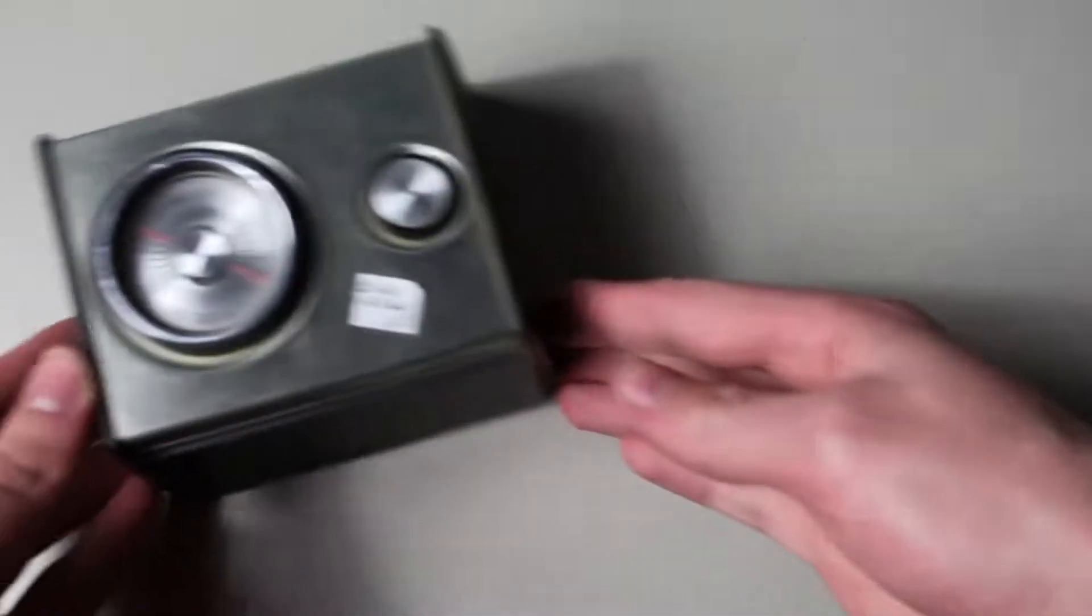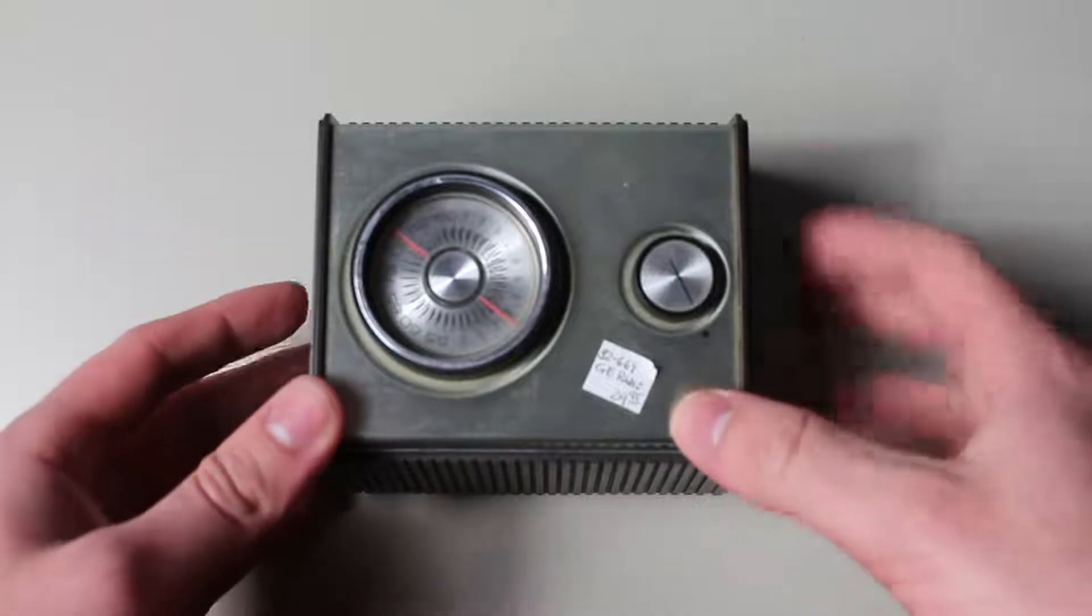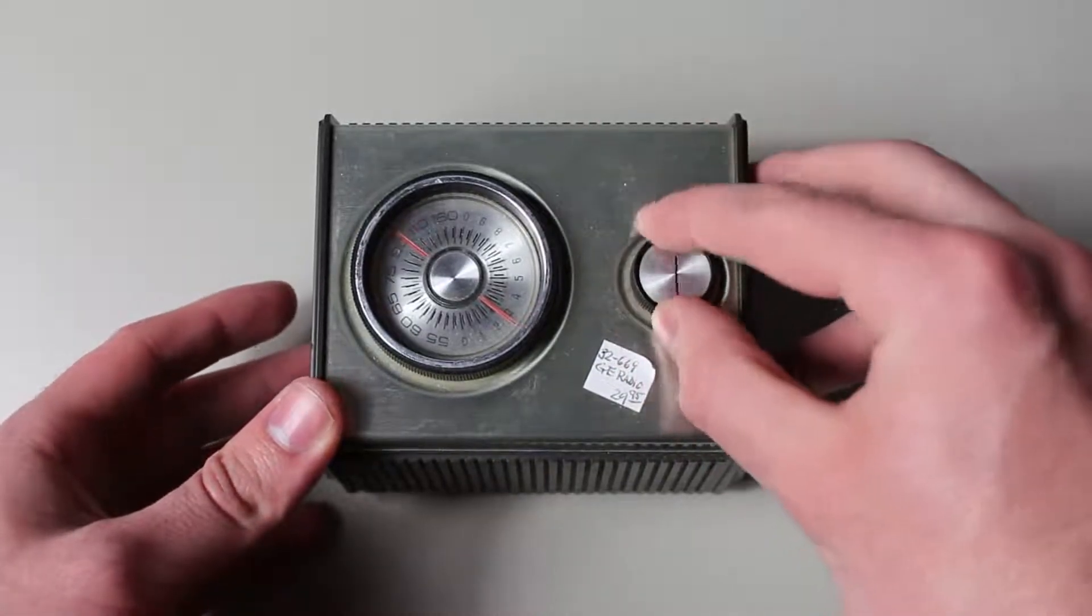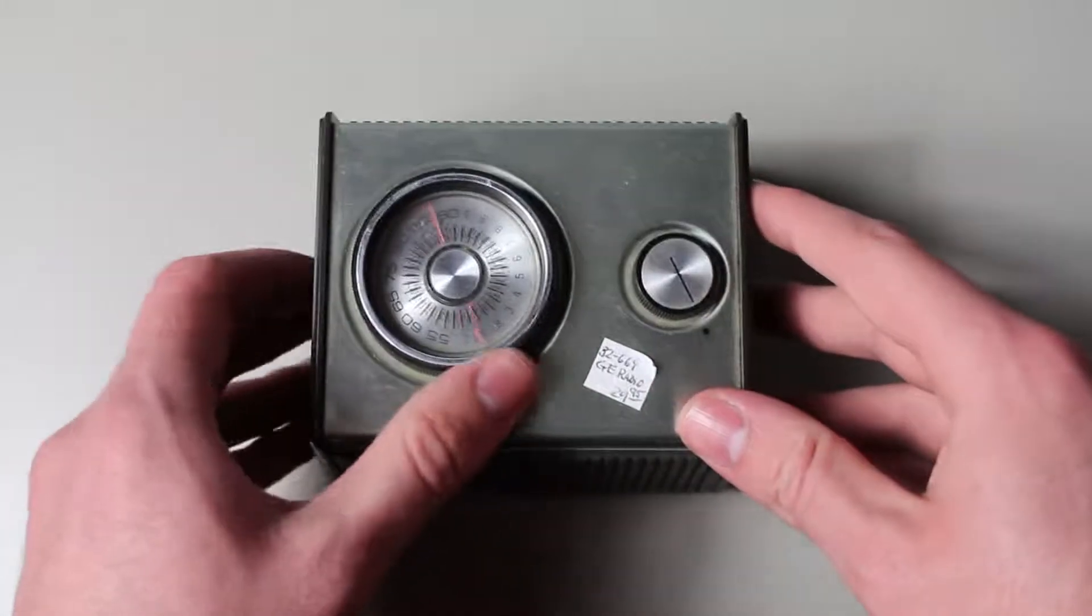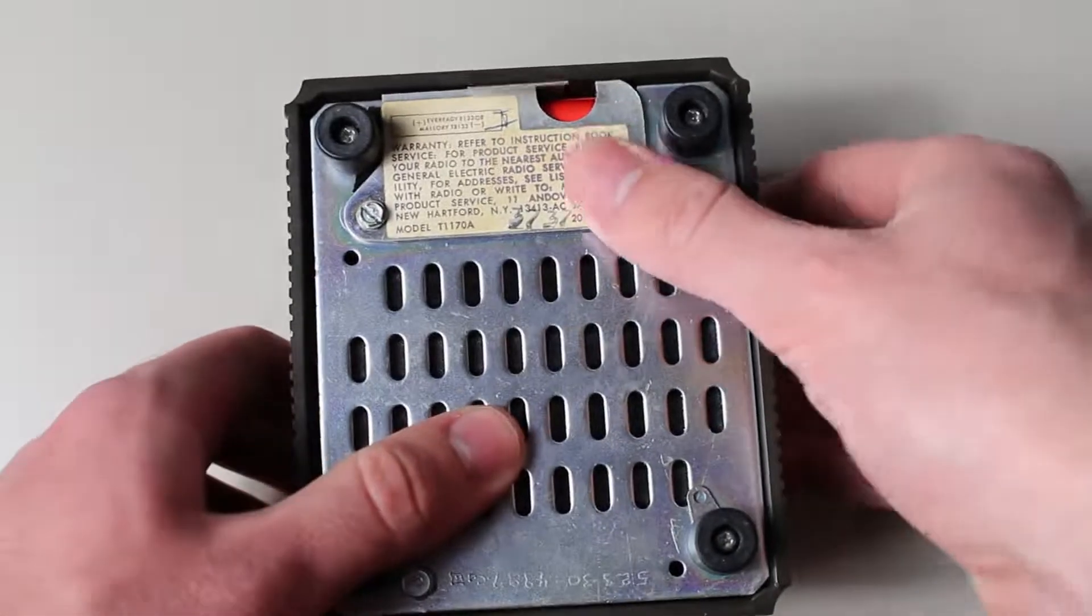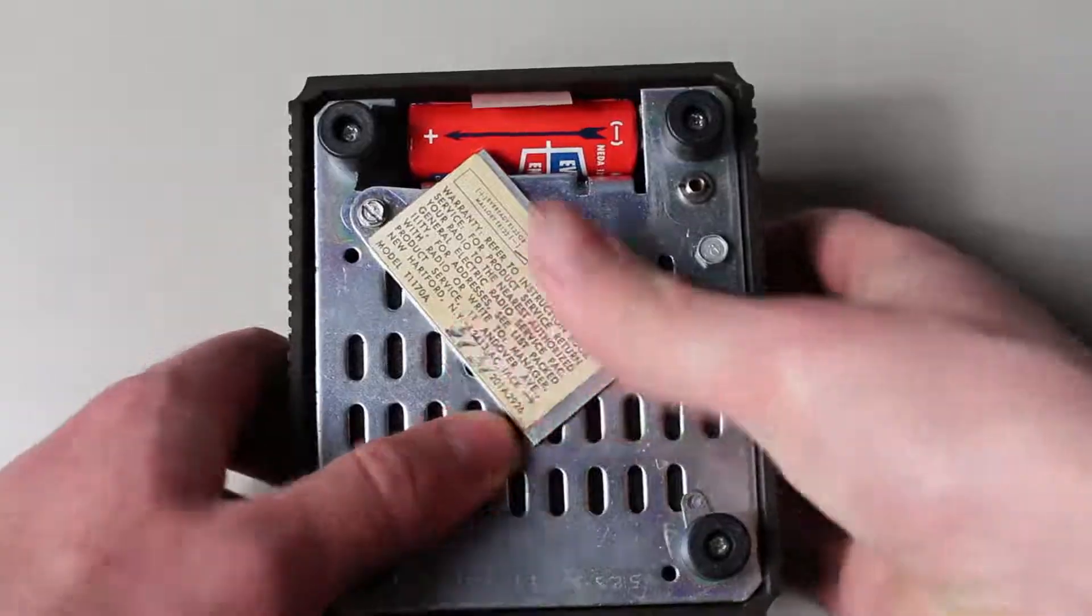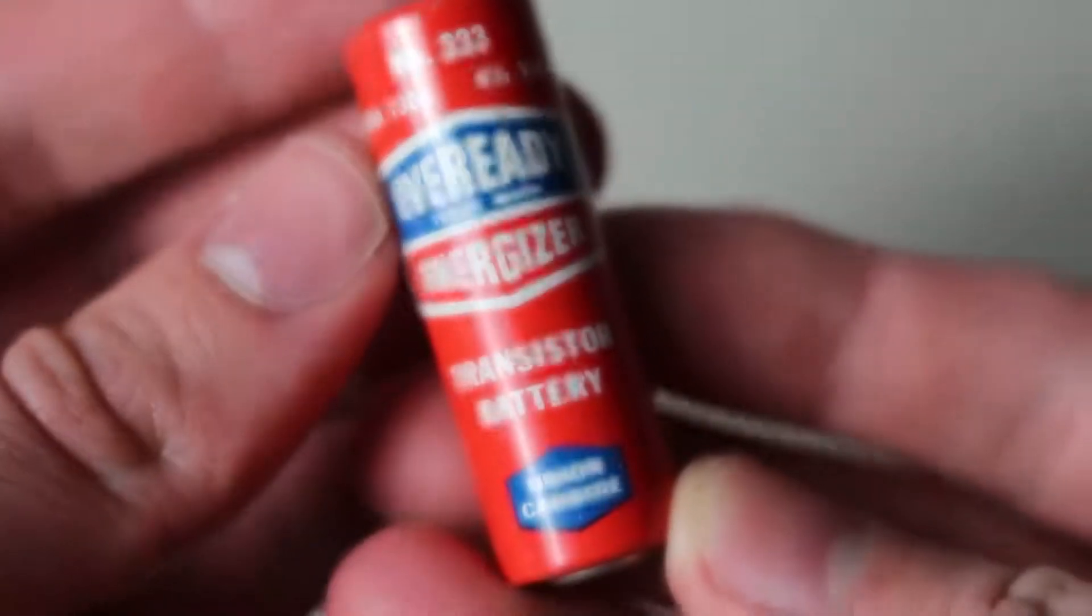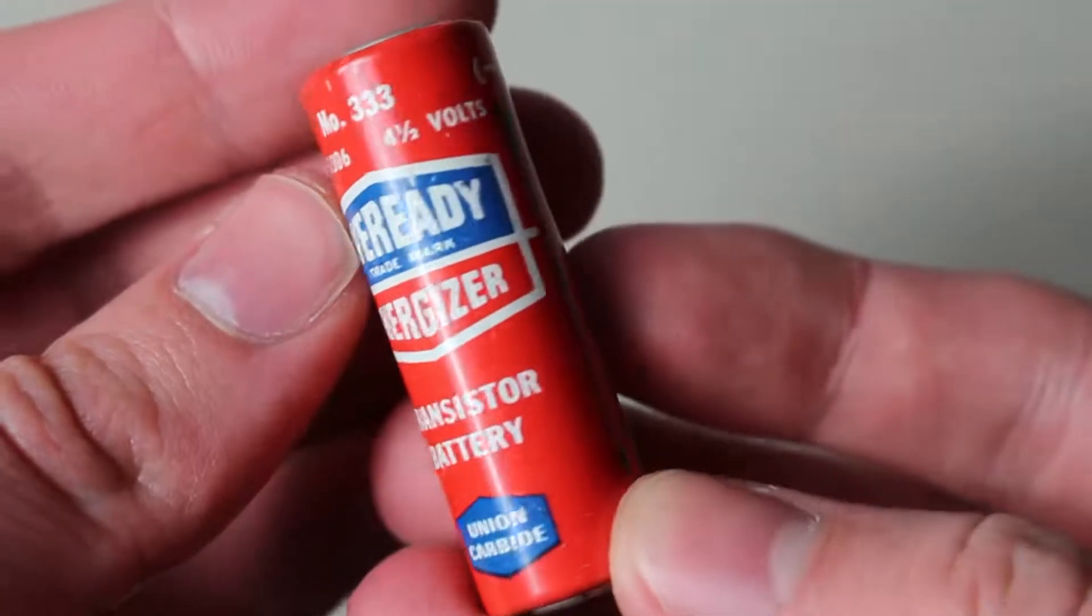Before we can make the transmitter, it's probably best to start with the thing that we are transmitting to. Based on the description, we can already know that it is a transistor radio. Before I can even turn the thing on, we've already run into our first challenge. The battery is unlike any I've ever seen, and I'd say that this kind of battery is no longer being made.